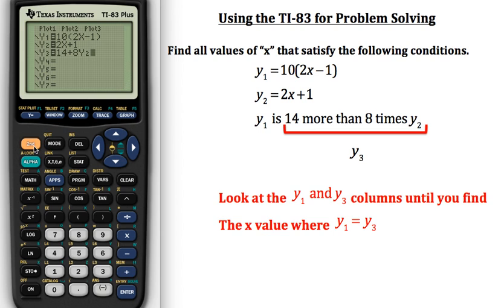Now what we're going to do is we're going to go to our table of values, so we're going to do second table. And our table of values are going to come up now. Right now it's showing us our x column or y sub 1 or y sub 2 column. We're not seeing y sub 3, but what we need to do then is arrow over so that we do see.